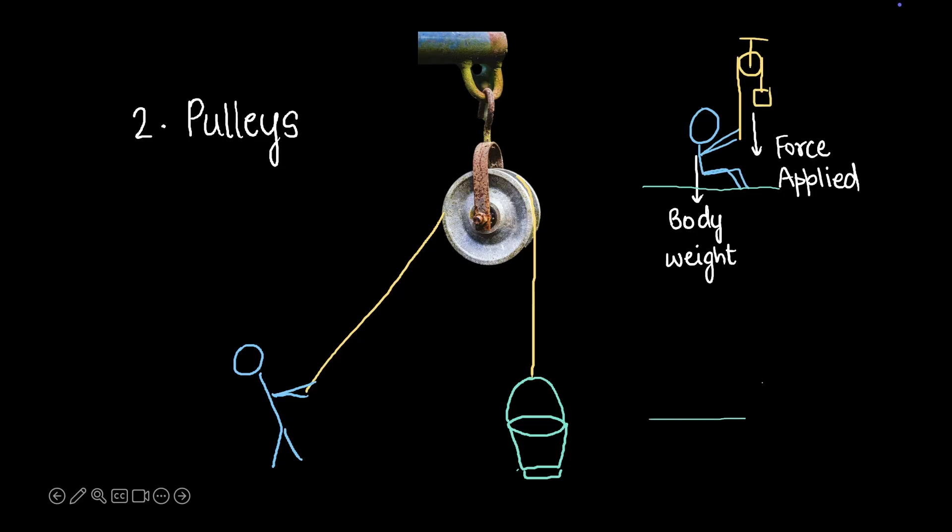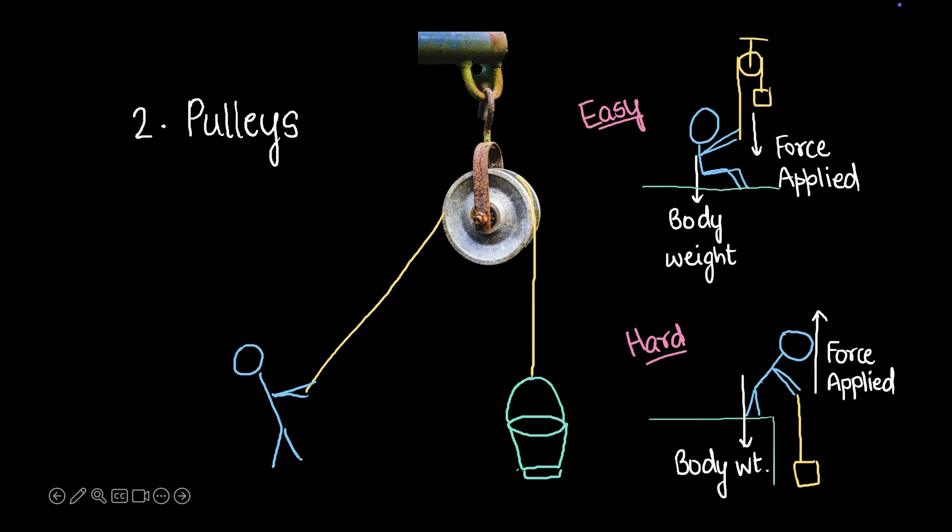On the other hand, let's take this scenario where you have to pull an object up using a rope. That's you and here's your object and your rope. Let's say you need to pull the object up, so your force is applied in the upward direction and the body weight is in the downward direction. In this case you can't use your body weight to help you apply the force. And that's why this becomes hard because the force and the body weight are in opposite directions, whereas this becomes easy because you can use the body weight to apply the force.